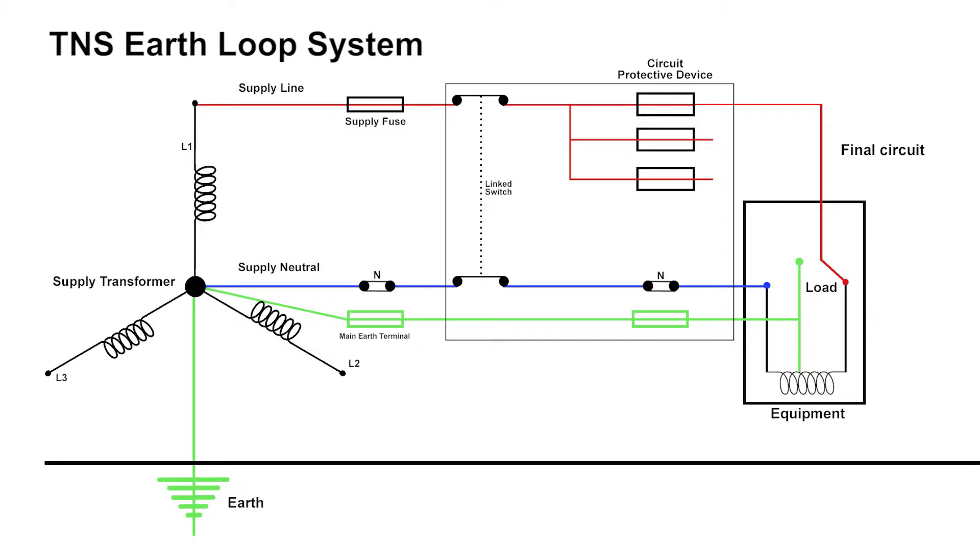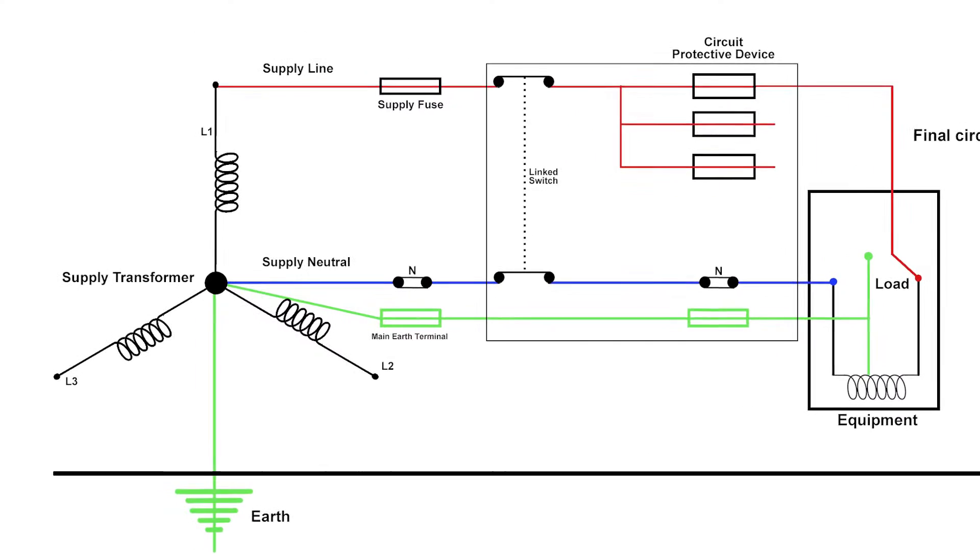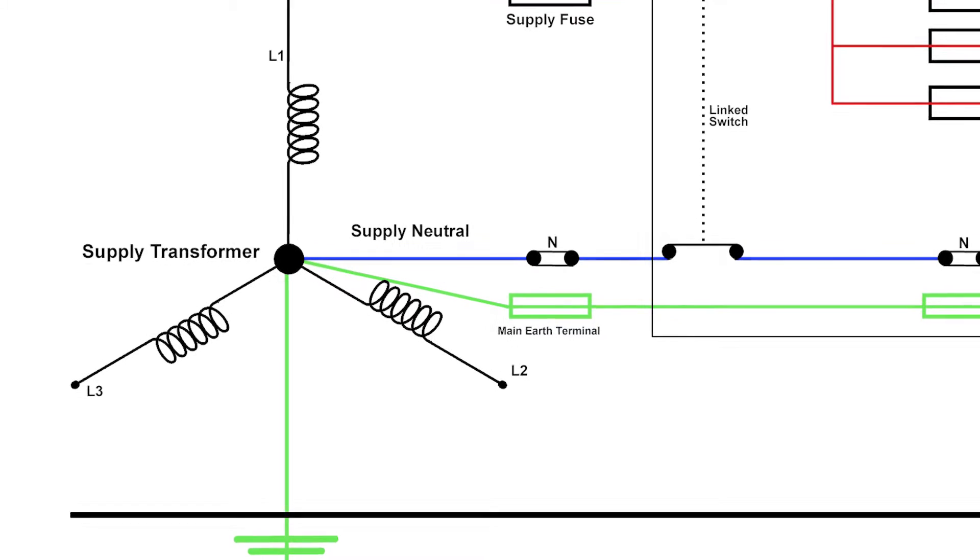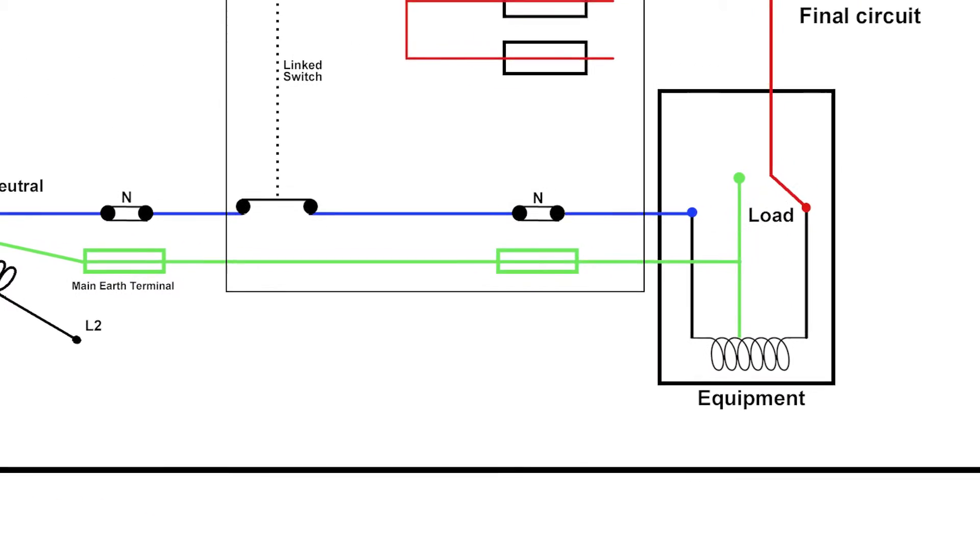The drawing we're looking at is a diagram of a TNS system. When we talk about earthing systems, the T would always stand for earth, N in this case is neutral, and S means that the neutral and the earth are entirely separate throughout the whole of the installation. In other words, they're separate from the supply transformer right through to the final circuit.